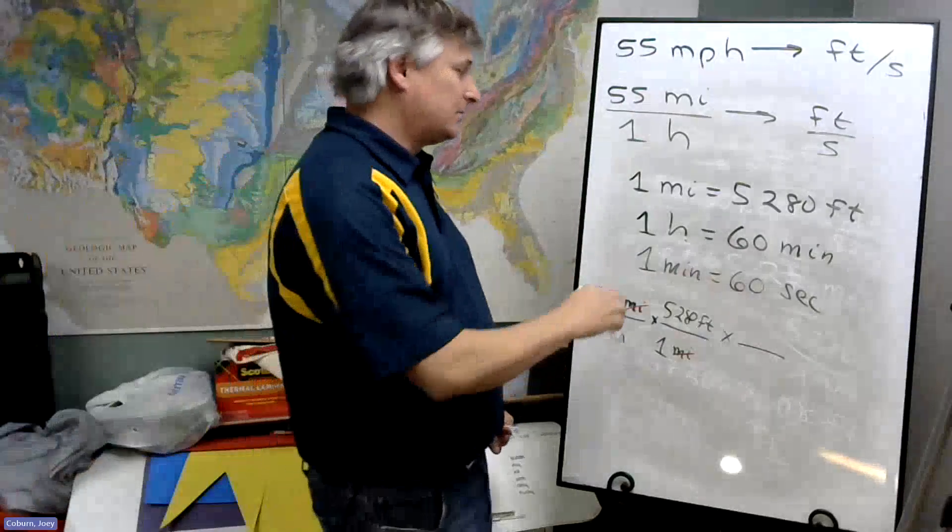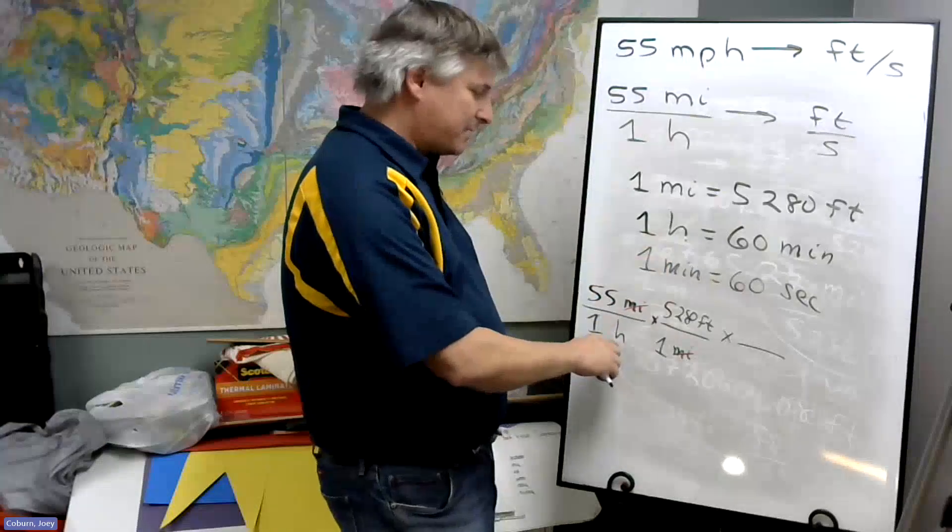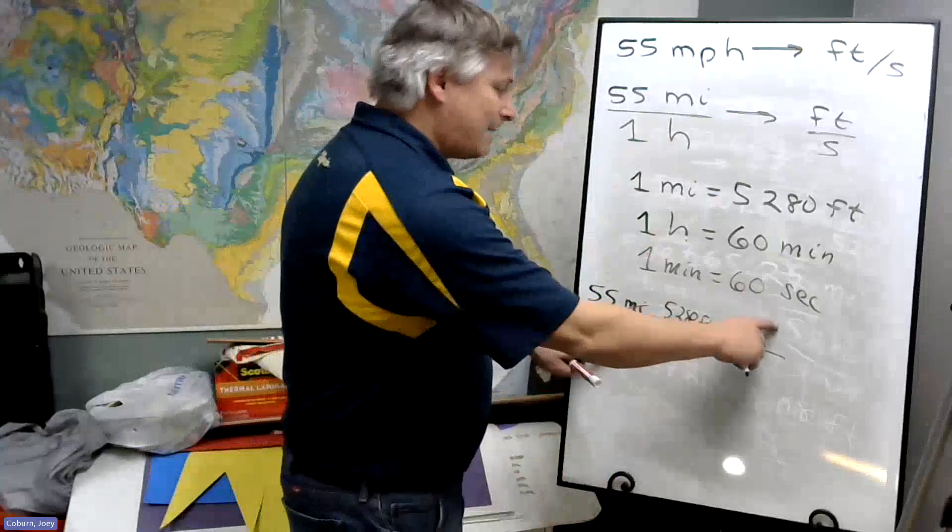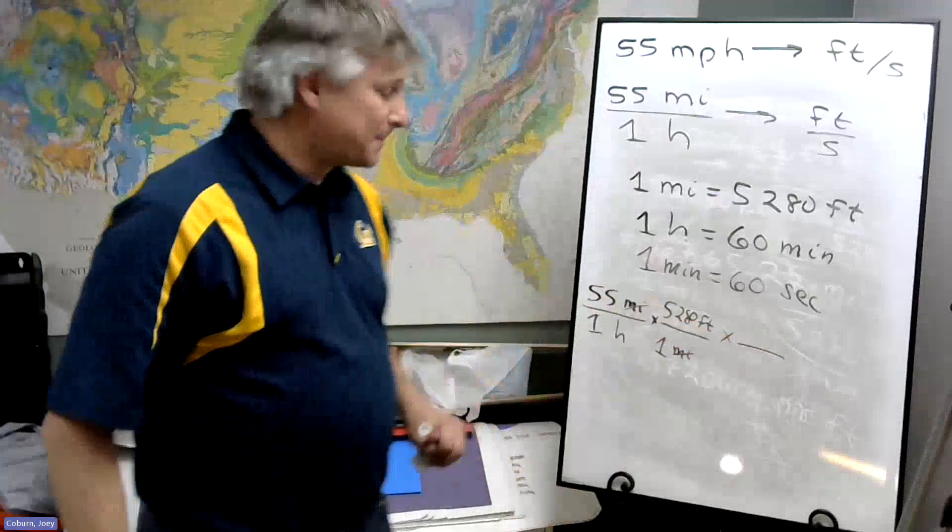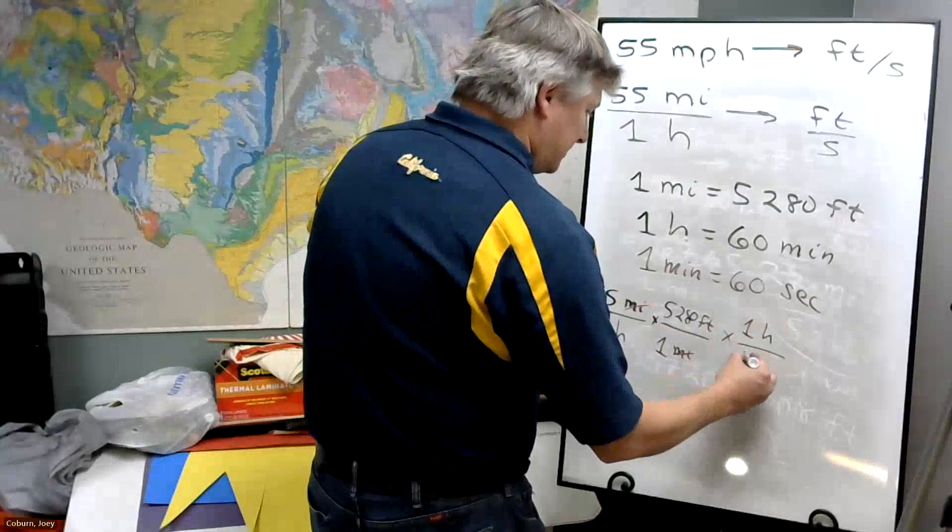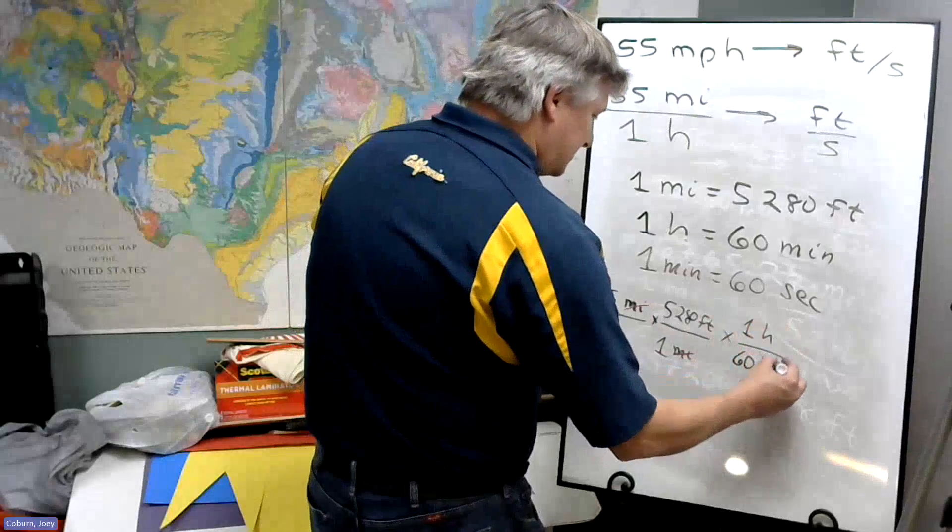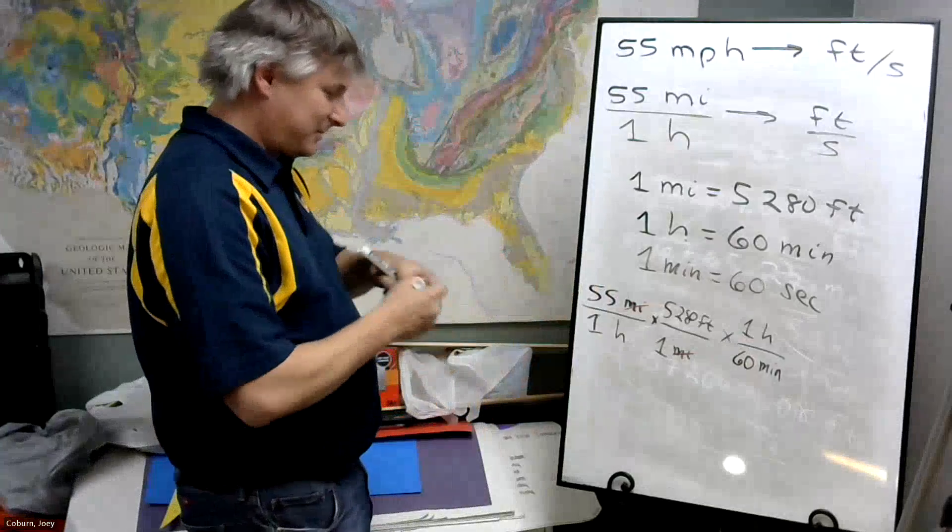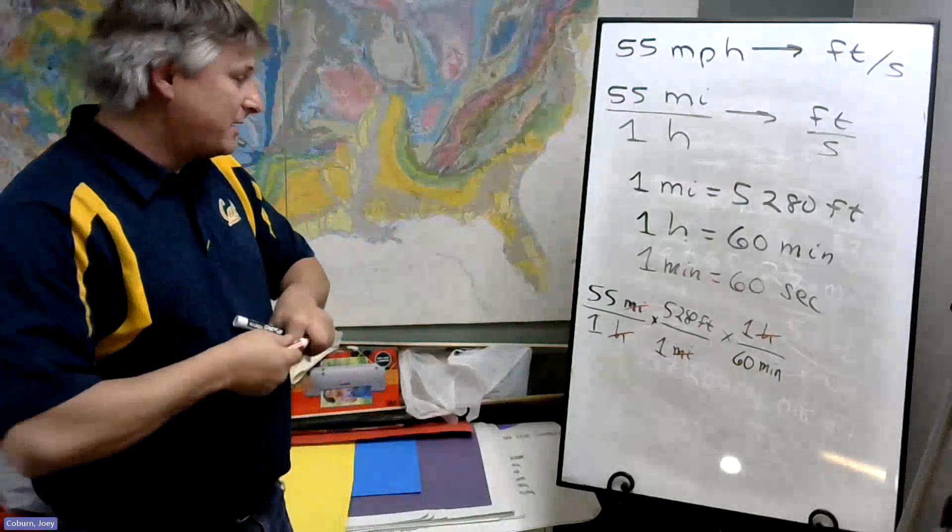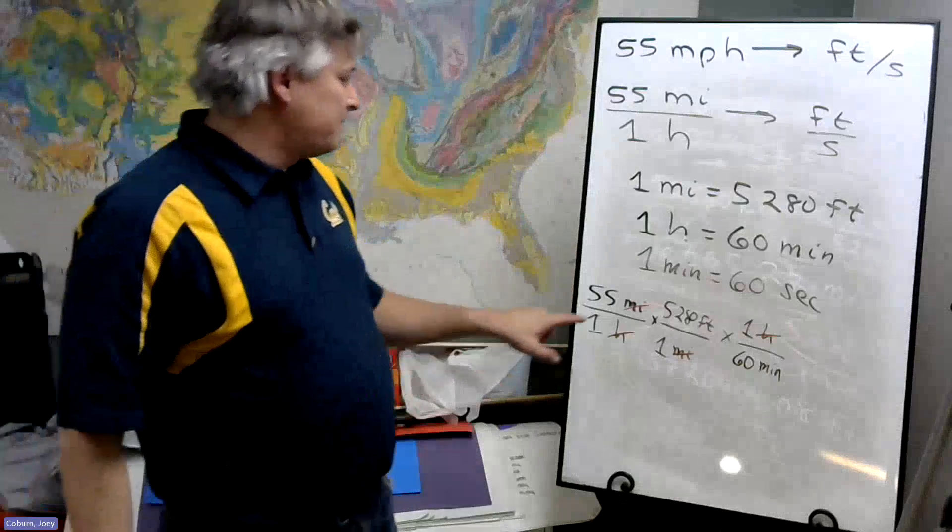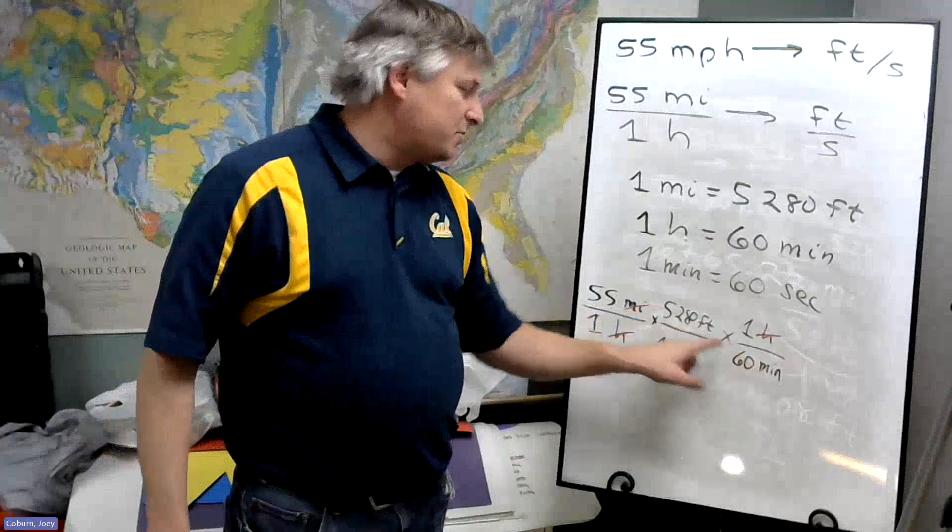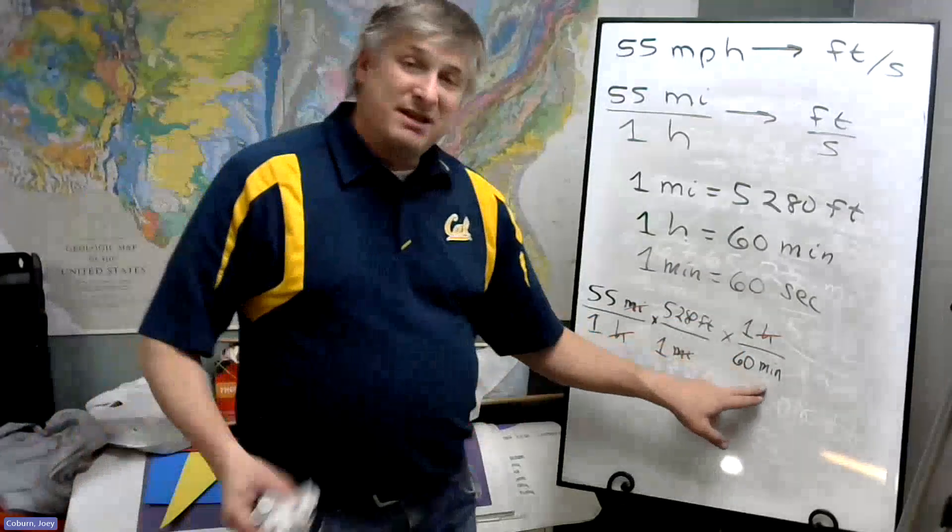And I want hours to cancel and minutes to remain. Now hours will only cancel if, because hours are on the bottom, they now need to be on top. Remember, we want them on opposite sides of our fraction bar. So I'm going to do this: one hour equals 60 minutes. Bottom top, we're okay, we're on the right track. And notice we've improved things. We've gone from miles per hour to feet in minutes. These are the two that remain, but we need the term minutes and seconds.